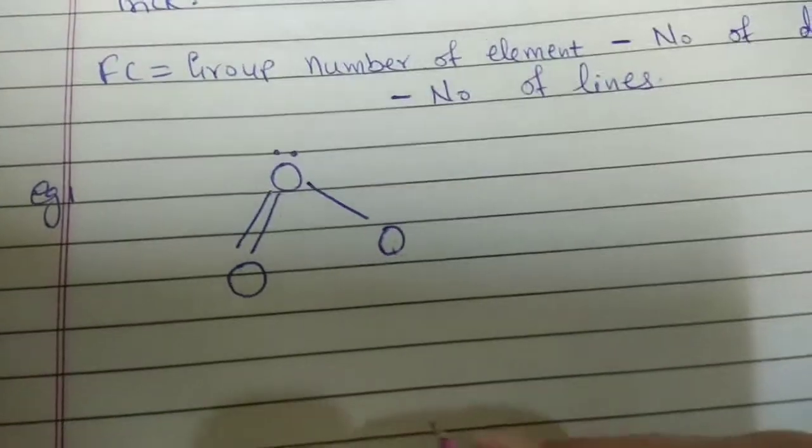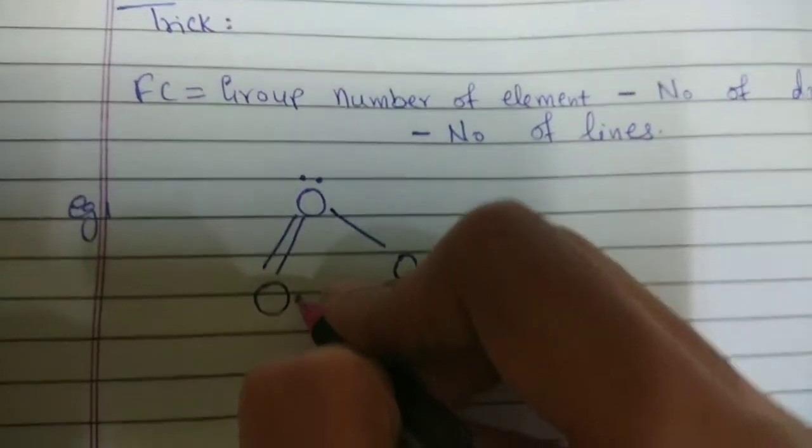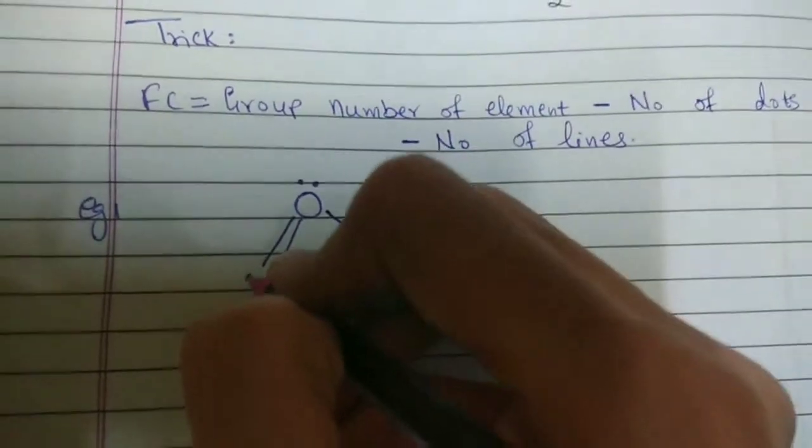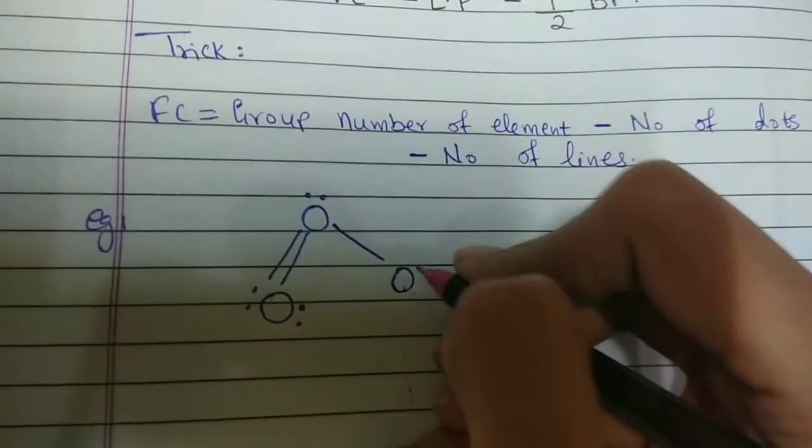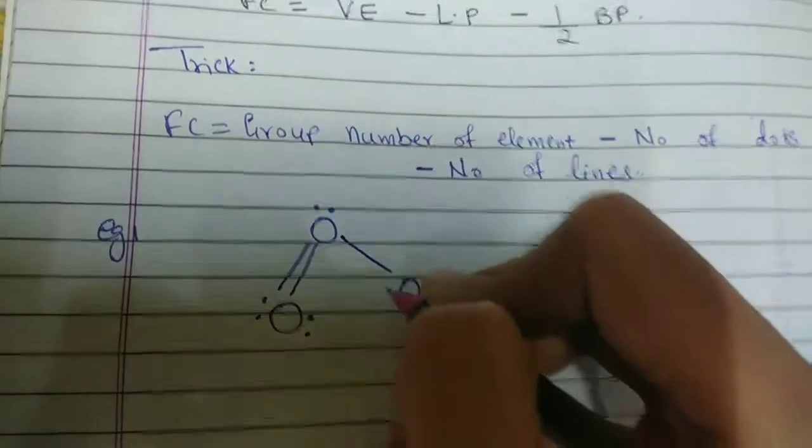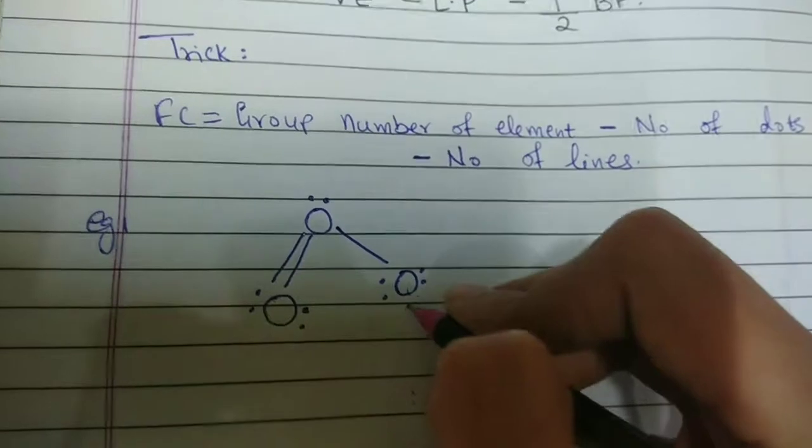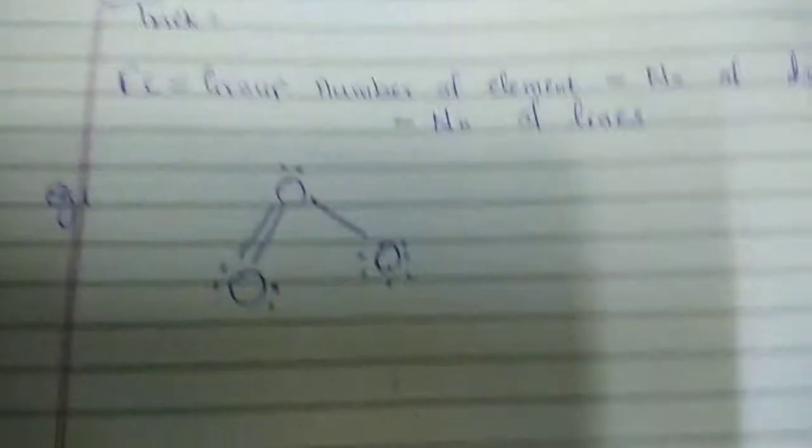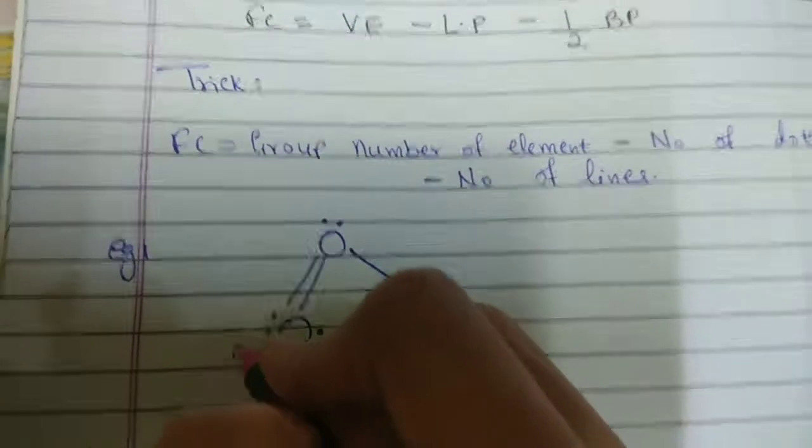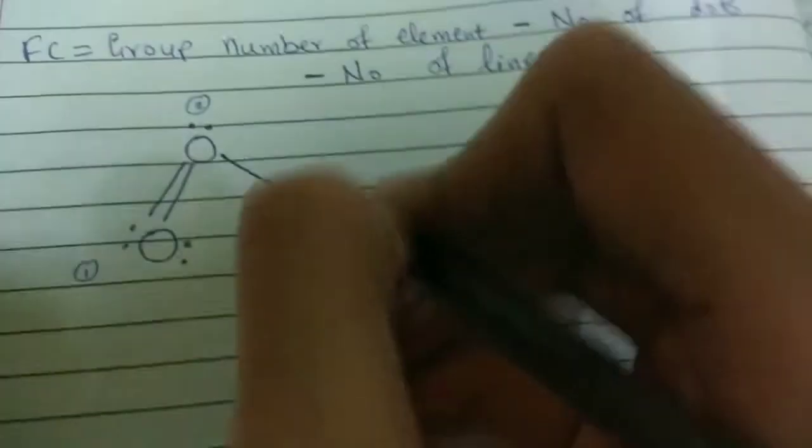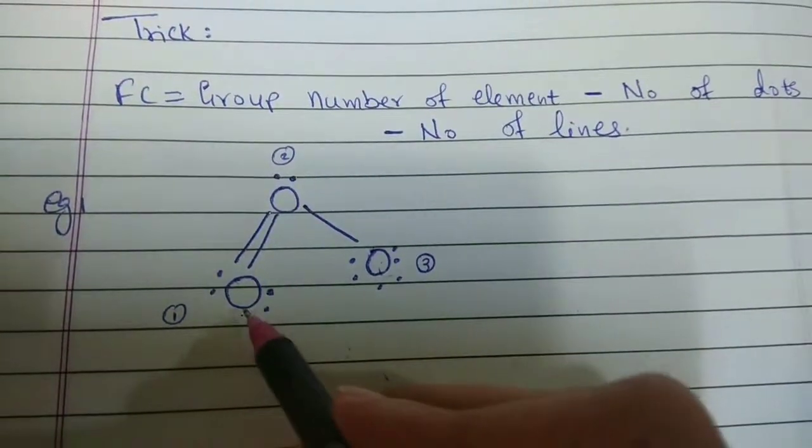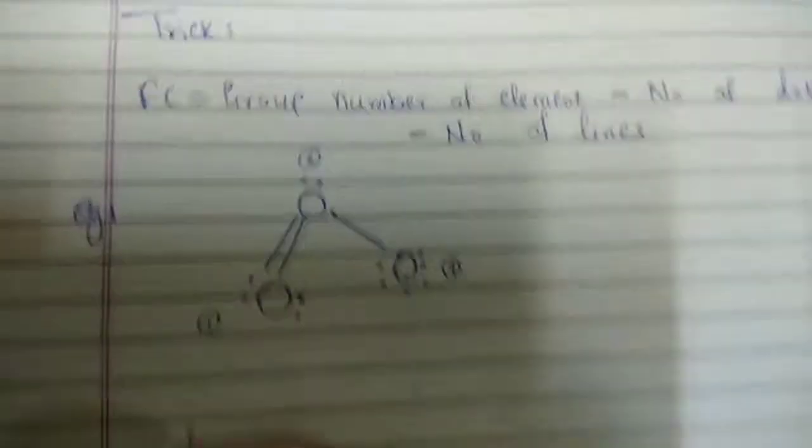So, let us take the first example as O3 or ozone. So, we draw the structure of ozone and we put all the lone pair of electrons on each atom properly. Now, to make that easier, we are labeling each oxygen atom as 1, 2, 3. You can label them as ABC, anything what you like.